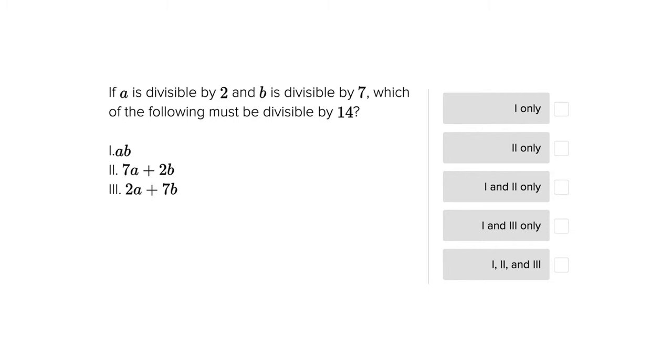So when you have a problem that either tells you right away what the factors of a number are, or tells you that a number is divisible by another number, as in this problem where we're told that a is divisible by 2 and b is divisible by 7, what I like to do is draw it out in front of me as a quick factorization tree.